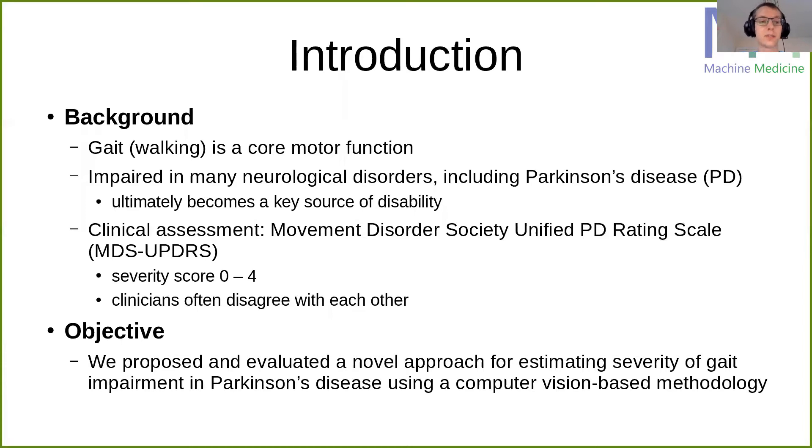In the clinic, it's usually assessed using the MDS-UPDRS, where clinicians observe a patient walking away and towards them, and then give them an impairment rating between 0 and 4, where 0 is normal gait and 4 is very severely impaired gait.